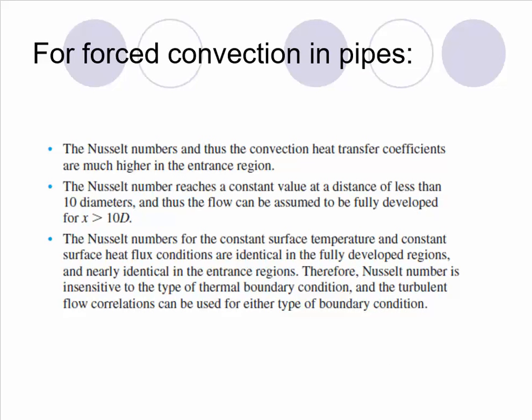For forced convection in a pipe, the Nusselt number and convection heat transfer coefficient are much higher in the entrance region. The Nusselt number reaches a constant value at a distance of less than 10 diameters, and thus the flow can be assumed to be fully developed for x greater than 10D. The Nusselt number for constant surface temperature and constant surface heat flux conditions are identical in fully developed regions and nearly identical in the entrance region. Therefore, the Nusselt number is insensitive to the type of thermal boundary condition, and turbulent flow correlations can be used for both types of boundary conditions.